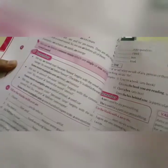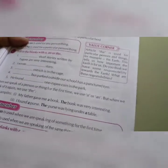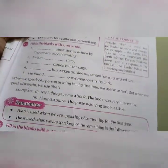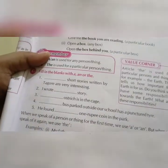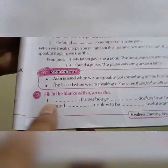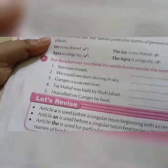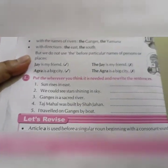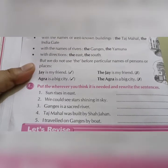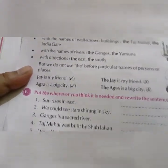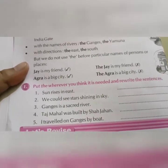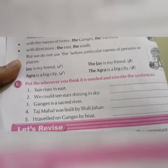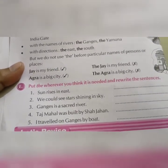Okay children, there is an exercise in your book on page number 37. You will fill up the blanks with A, AN, or THE. You also have to insert the article wherever you think it is needed. You will complete this exercise and it will be your homework. I will post the answers in the assignment section.